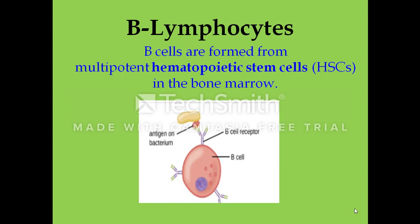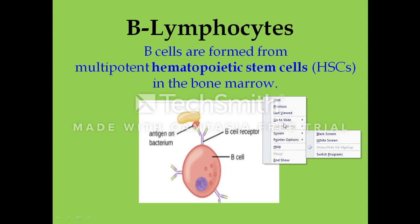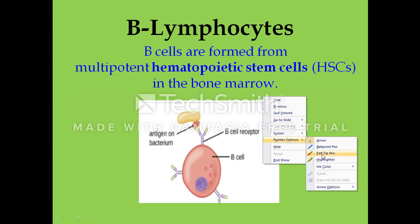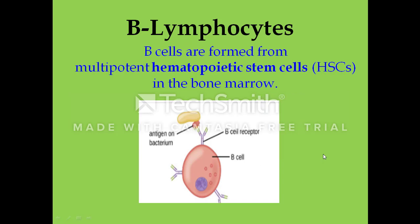This is the diagrammatic representation of the B cell. This B cell has B cell receptors, which are Y-shaped glycoproteins attached to the surface of the B lymphocyte. B lymphocytes can either express membrane-bound receptors on their surface or secrete secretory antibodies into the lymph and body fluid.